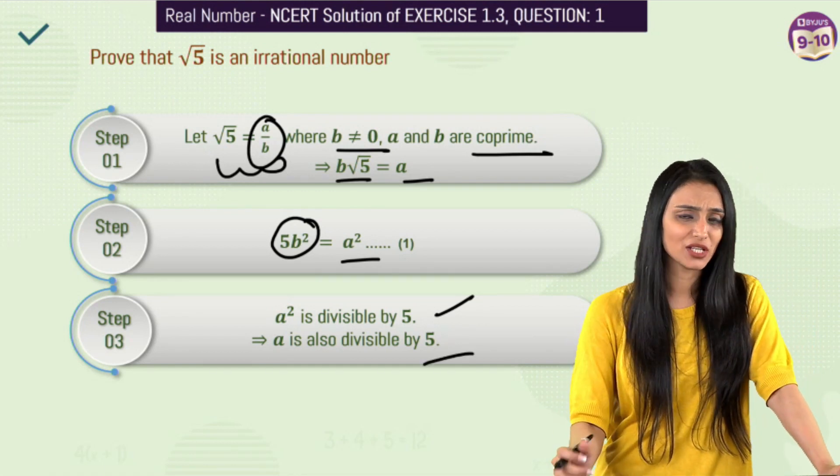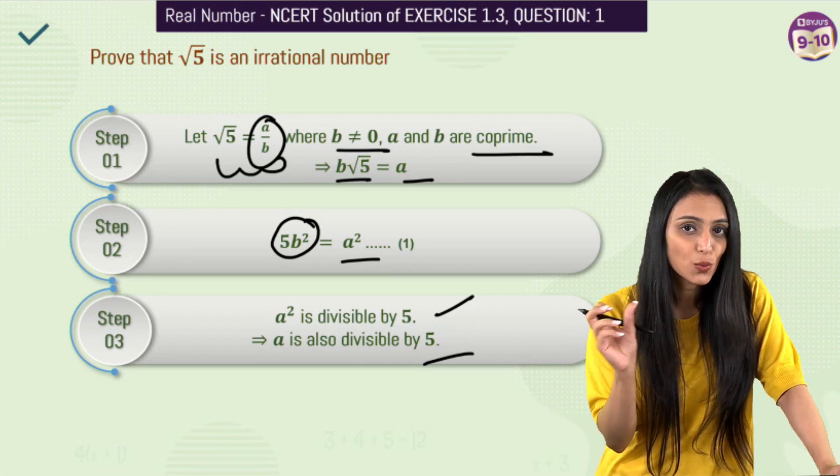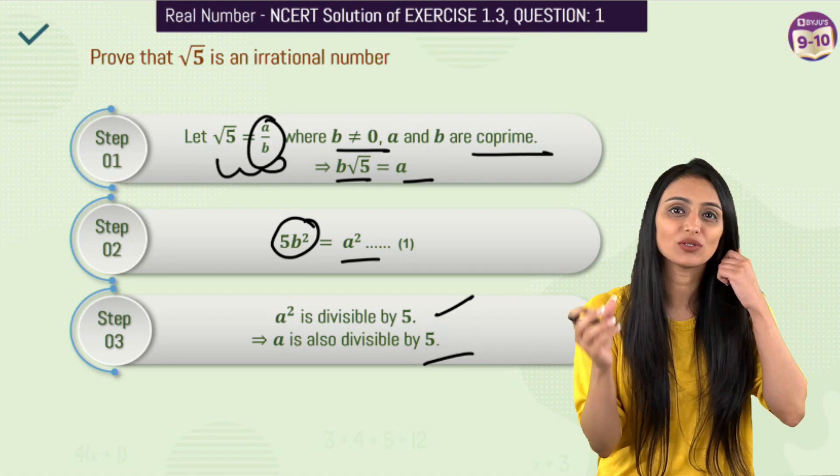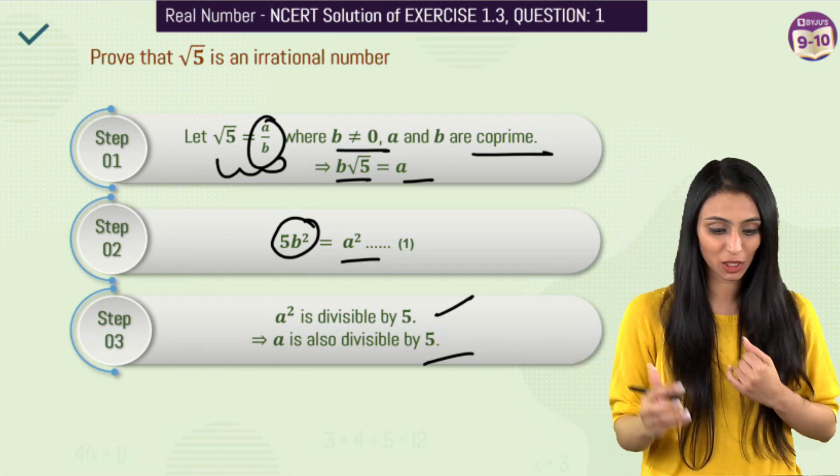That means let's suppose here a, a square is 25. So 25 is divisible by 5. So 25 is nothing but that's 5 square. So that 5 is also divisible by 5. So this is applicable according to the fundamental theorem of arithmetic.